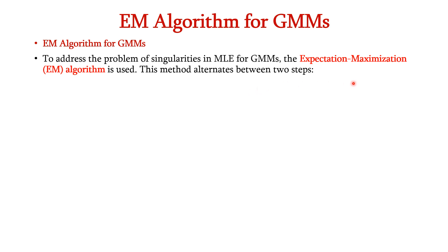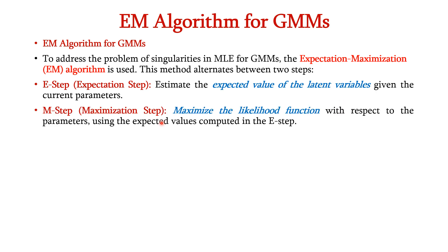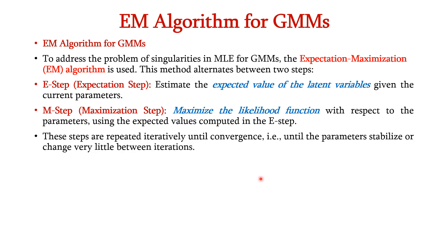To address the problem of singularities in MLE for GMMs, the Expectation Maximization algorithm is used. This method alternates between two steps: the E step, which estimates the expected value for the latent variables given the current parameters, and the M step, which maximizes the likelihood function with respect to the parameters using the expected values computed in the E step. These steps are repeated iteratively until convergence, that is, until the parameters stabilize or change very little between iterations.